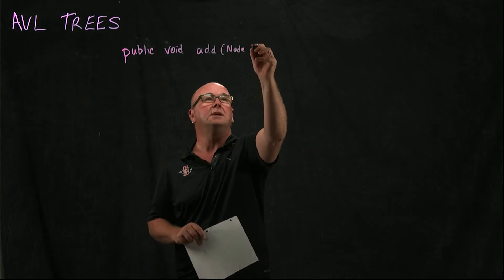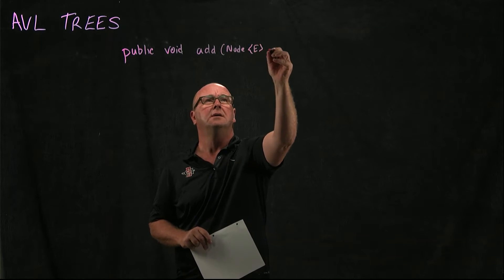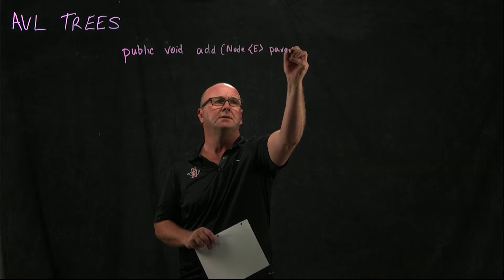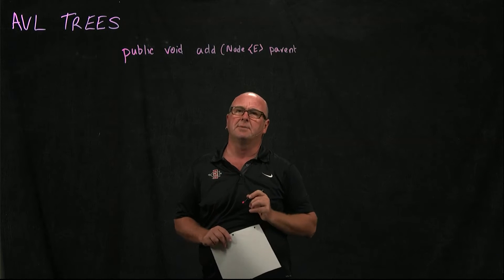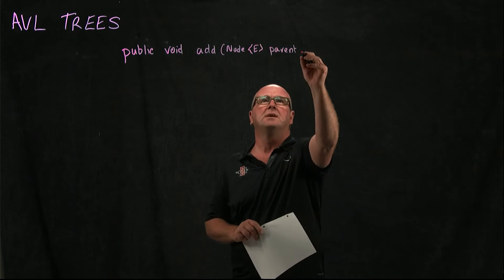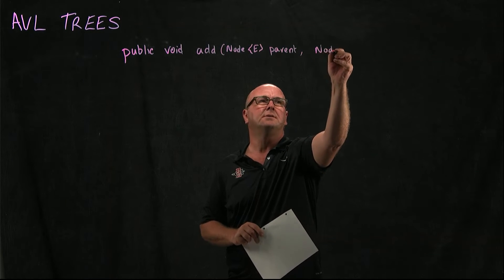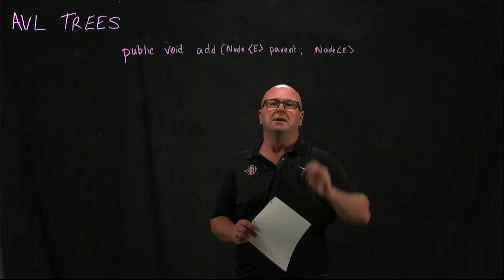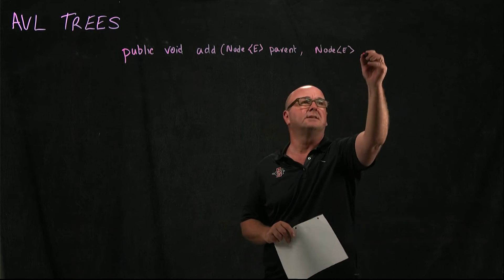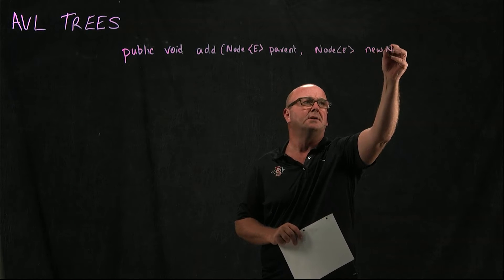One node E is the parent position that we're thinking about adding to, and the second node is the element that we're going to add. So that's our new node.